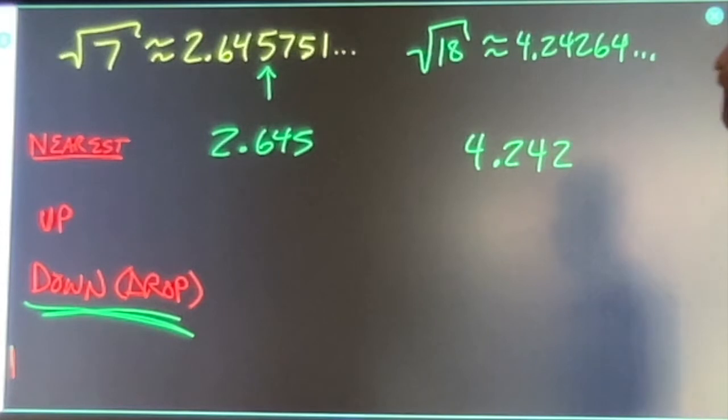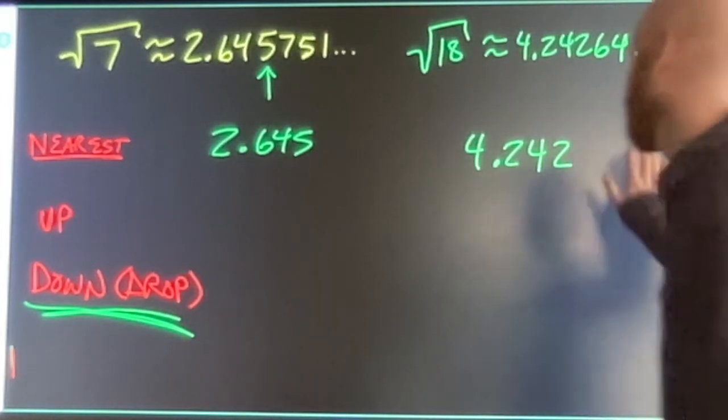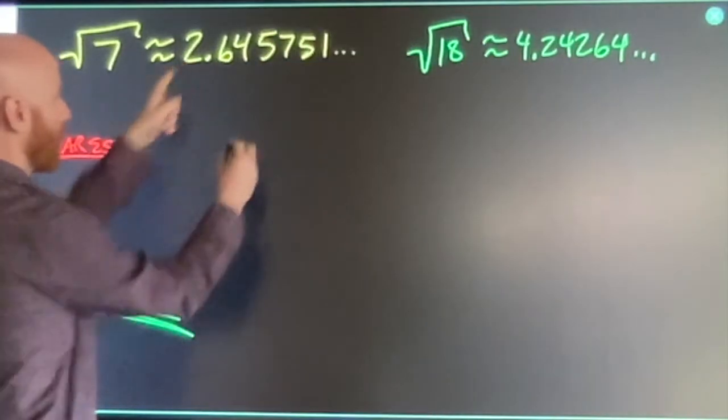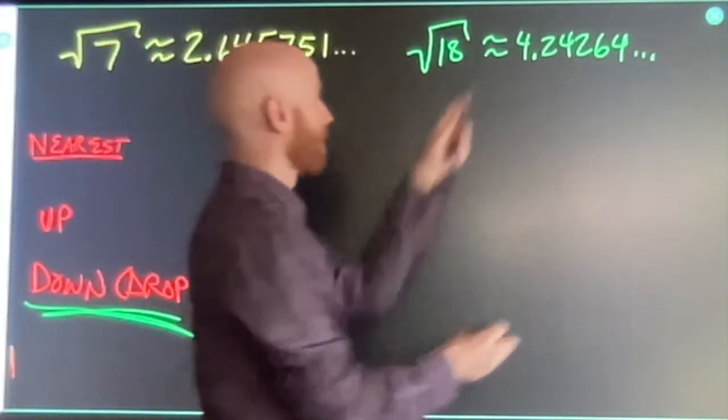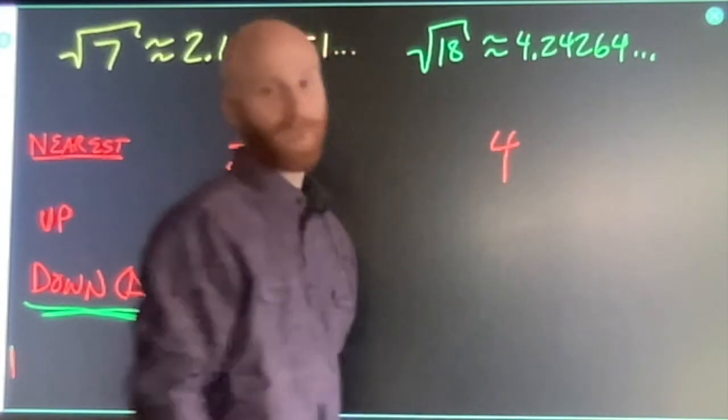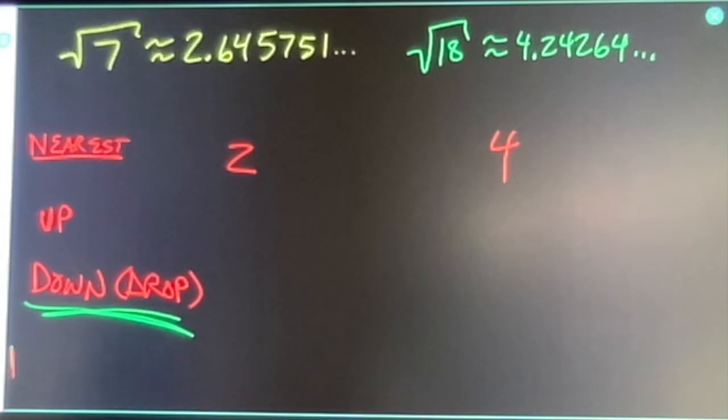If I was rounding to the nearest whole number. My bad. If I was rounding down to the whole number. Then the whole number that I see is two. This is approximately two. The whole number that I see is four. That's approximately four. That's rounding down. You just drop all of the values after the one you care about.